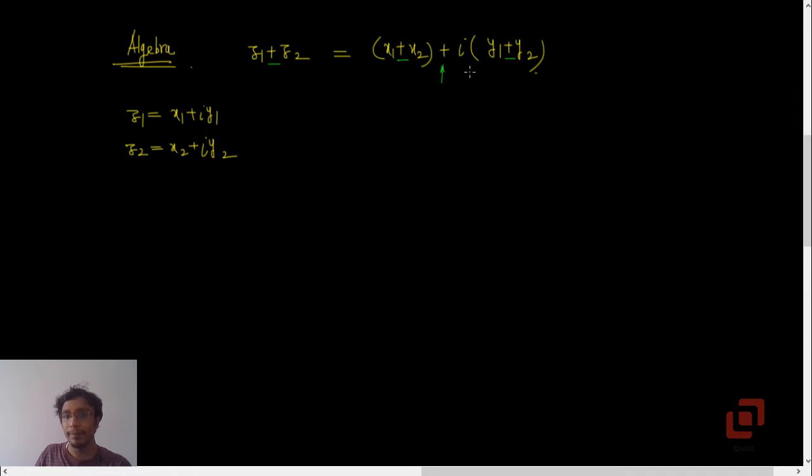Then let us talk about the product z1 into z2. We multiply the complex numbers the way we do real numbers. First we will get x1x2, then let us multiply i y2 by x1, so it will be i times x1 y2. Then let us multiply i y1 by x2, so it will be x2 y1.